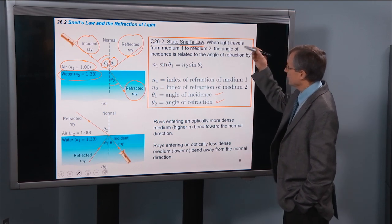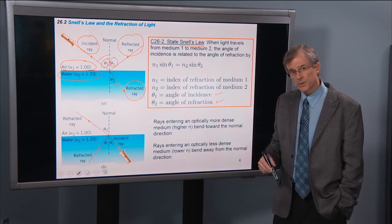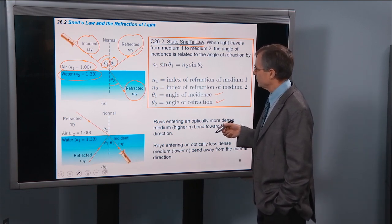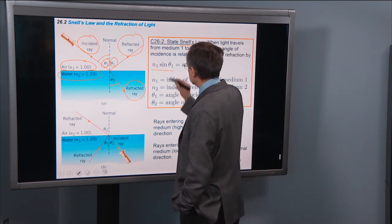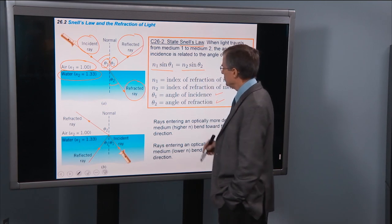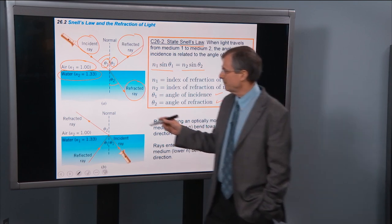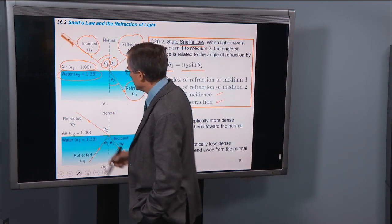So when light travels from medium 1 into medium 2, or vice versa, the angle of incidence is related to the angle of refraction by N1 sin θ1 equals N2 sin θ2, where N1 and N2 are the two indices of refraction that we talked about before, N1 for air, N2 for water.